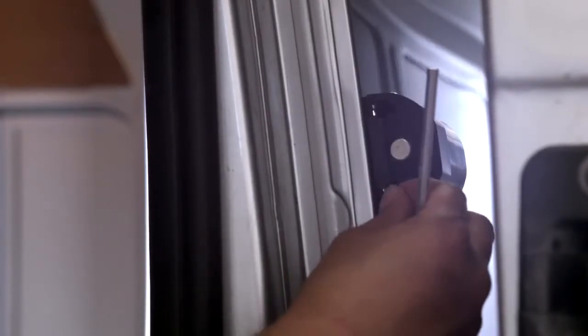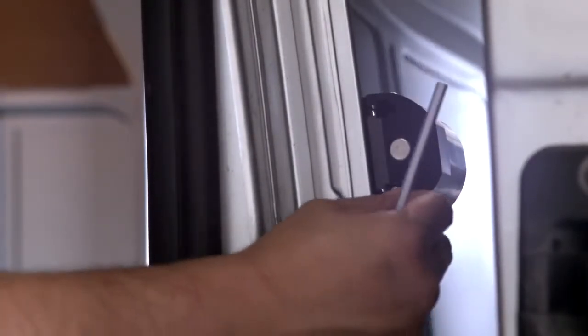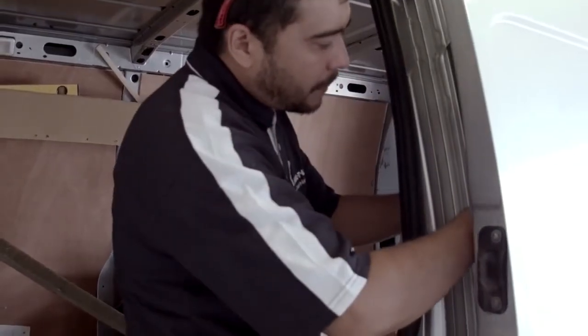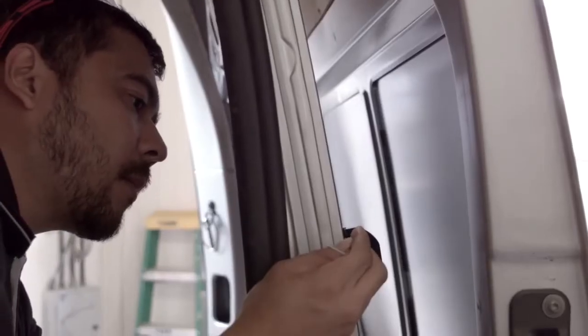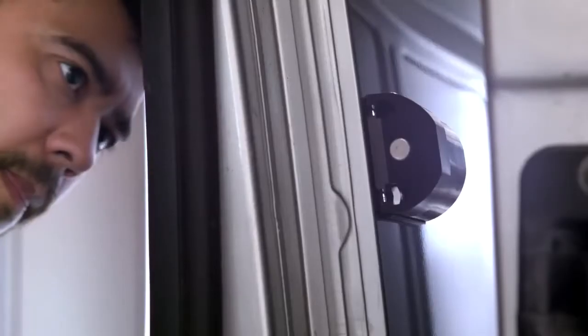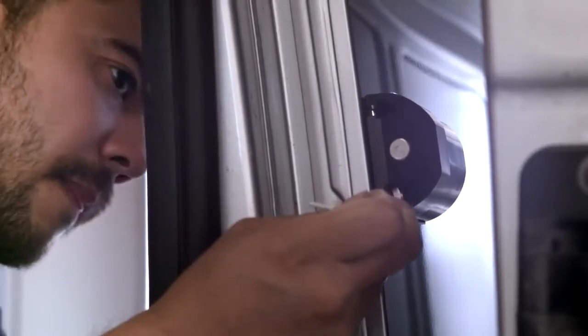Taking a weld nut, insert it into one of the slots in the orientation shown. We can now insert a socket head bolt, serrated washer and large flat washer through the panel skin whilst sliding the weld nut along the slot until it locates with the bolt. Again, not tightening as before. We can now repeat the process with the other fixing.